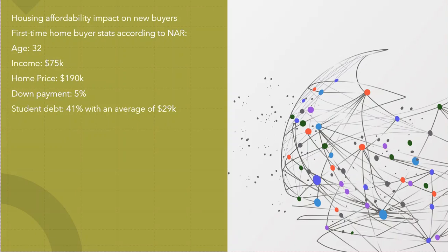The down payment on average, according to the NAR, is 5%, which is telling you that they are probably using either an FHA loan or some kind of insured conventional loan with that low percentage down.